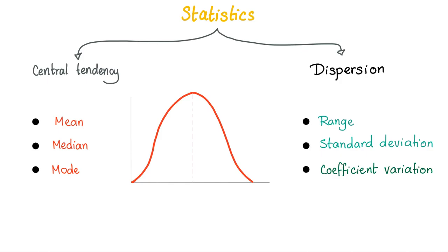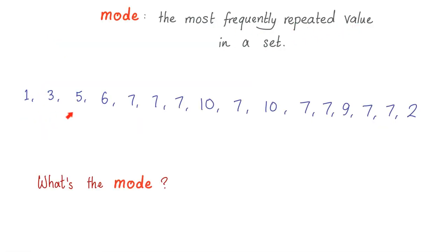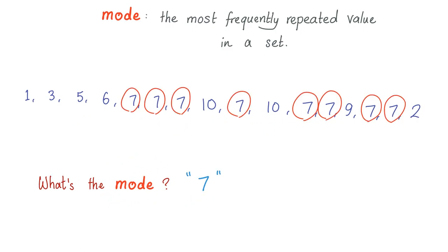Bimodal — bi means two, modal from mode. The mode is the most frequently repeated value in a set. What's the most frequently repeated value in this set here? If you say seven, you're a genius. Seven is the most repeated value, so seven is the mode.